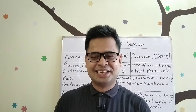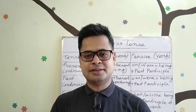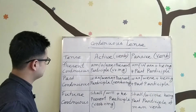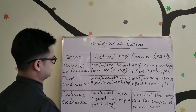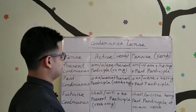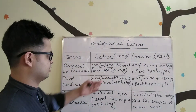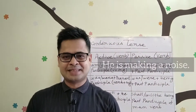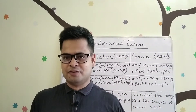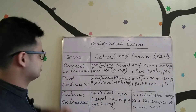Before going further, let's talk about present participle. Present participle refers to the -ing form of a verb — that means the progressive mode. Now let's look at present continuous tense. In active voice, we use 'am/is/are' plus the present participle. For example: 'He is making a noise.' 'Is making' is the verb form used in active voice for present continuous tense.